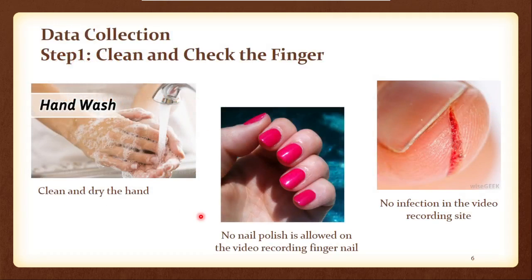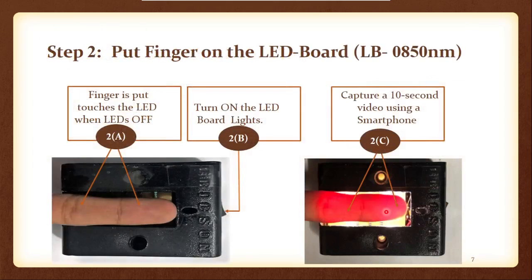Now the data collection steps. At first steps we need to clean and dry our hand, and also no nail polish and no infection are allowed in our recording site. In the second step we need to put our finger on the LED board, for example LED board 850 nanometer. When the LED are off, then we need to turn the LED on and then we have captured 10 second video using a smartphone.